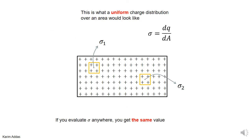The meaning of sigma — we can also imagine it for a uniform charge distribution. The distance between the charges is everywhere the same, so this distribution is a uniform charge distribution. So imagine you want to get sigma at point 1, sigma 1, and sigma at point 2, sigma 2, and you want to compare them.